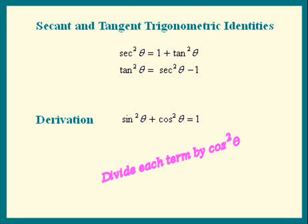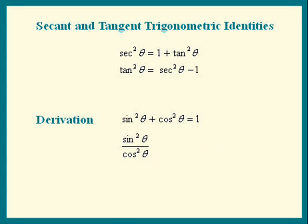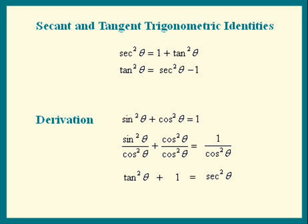We get sine squared over cosine squared plus cosine squared over cosine squared equals 1 over cosine squared. Now, I'm not saying the theta, but make sure you write it in, okay? Sine squared over cosine squared is tan squared. The next term, everything cancels, we get a 1. And the 1 over cosine squared is secant squared. There it is.